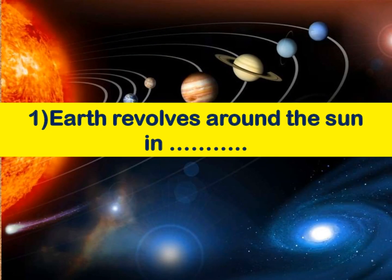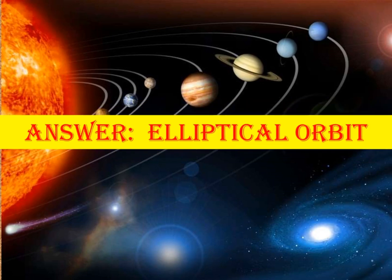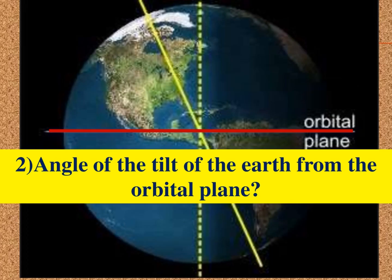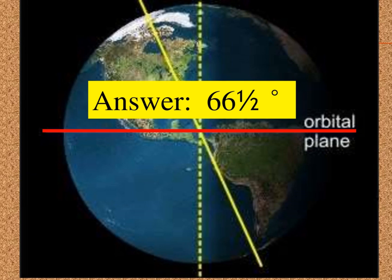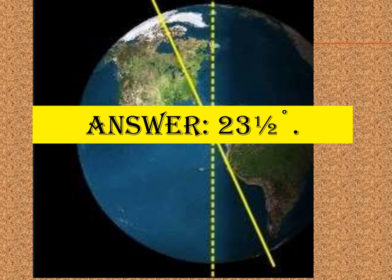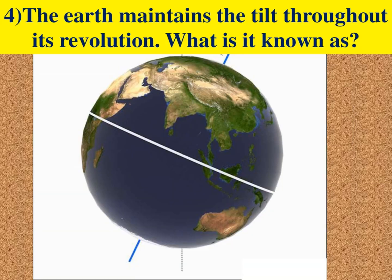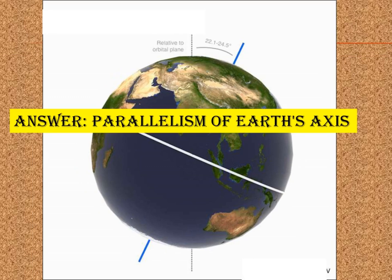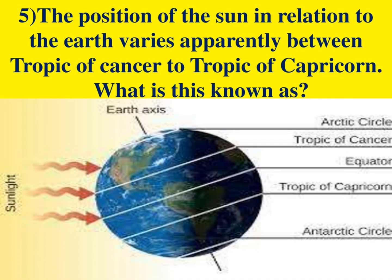The first question: Earth revolves around the Sun in an elliptical orbit. The angle of the tilt of Earth from the orbital plane is 66 and a half degrees. The angle of the tilt of Earth from the vertical plane is 23 and a half degrees. The Earth maintains this tilt throughout its revolution — what is it known as? Answer: Parallelism of Earth's axis.